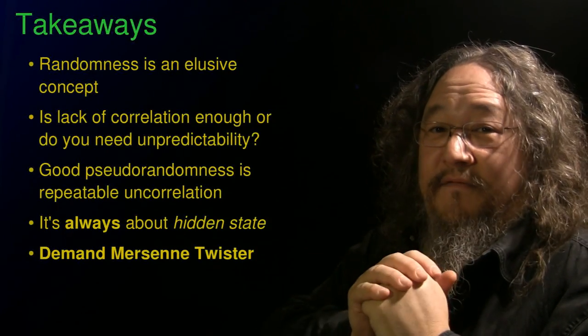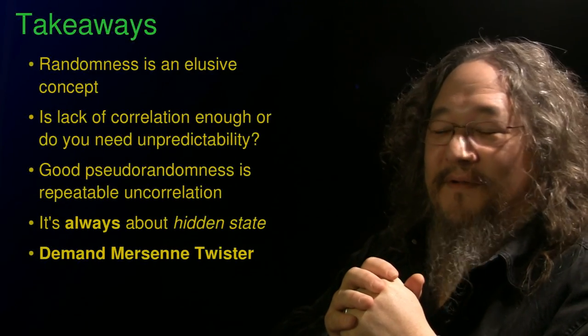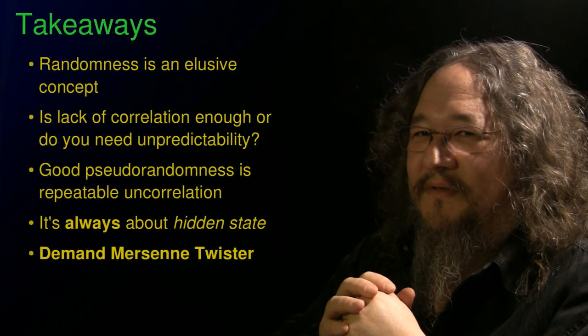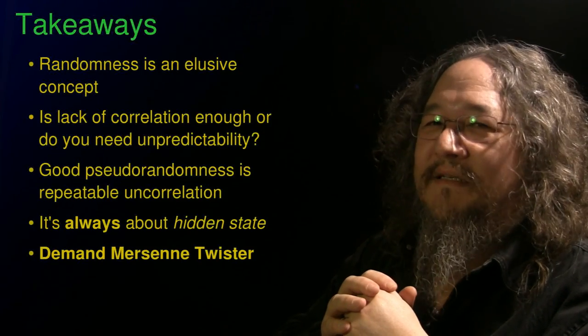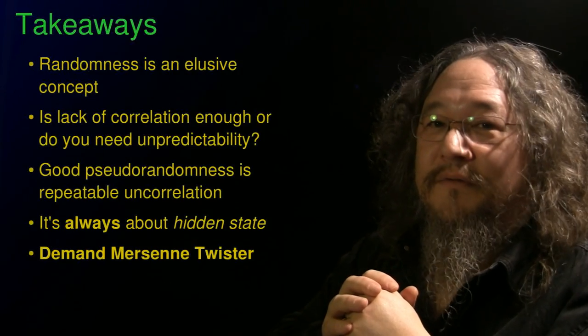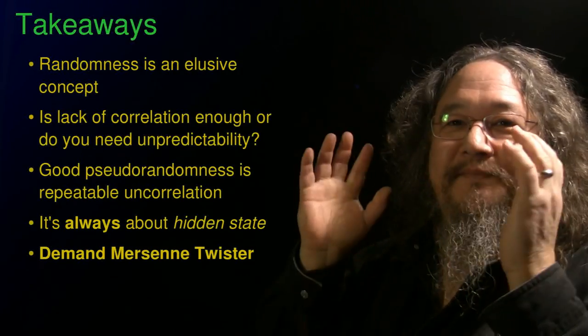Finally, the bottom line, if you're in a position where you're building a model of some sort, and you're using random numbers, make sure you've got the Mersenne Twister, or at least something reasonably modern. There are still bad random number generators out there. Don't use them. That's it.